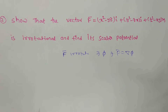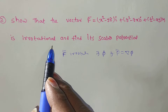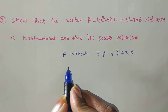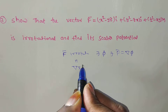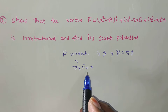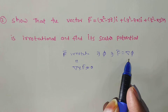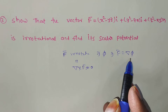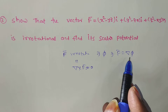First, what we have to prove is that it is irrotational. Irrotational means it is enough to prove ∇ × f̄ = 0. Then after that, we have to compare f̄ = ∇π. What is ∇π? Grad π, which is i·(∂π/∂x) + j·(∂π/∂y) + k·(∂π/∂z).